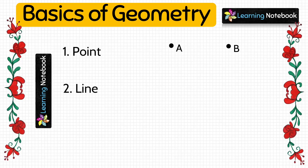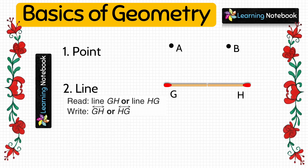Next is 'line'. A line is a set of points which goes indefinitely in both directions. Let's take two matchsticks and paste them in opposite directions to form line GH. We read it as line GH or line HG and write it as GH or HG with a small line on it.